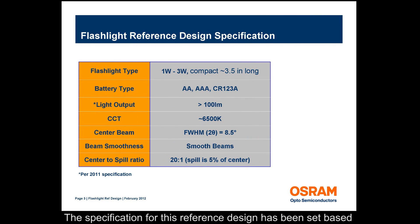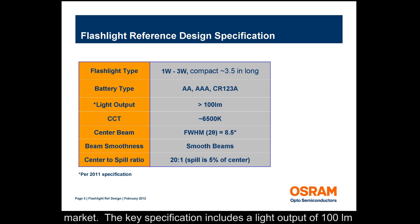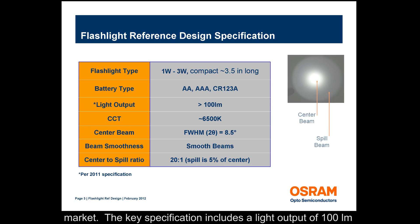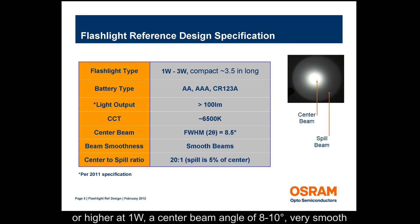The specification for this reference design has been set based on some of the currently available standard flashlights in the market. The key specification includes a light output of 100 lumens or higher at 1 watt, a center beam angle of 8 to 10 degrees, very smooth center and spill beams, and a center to spill ratio of 20 to 1.